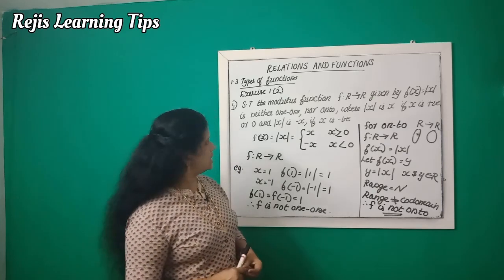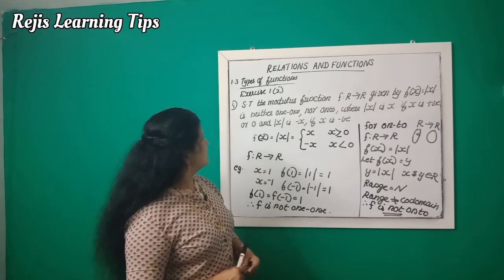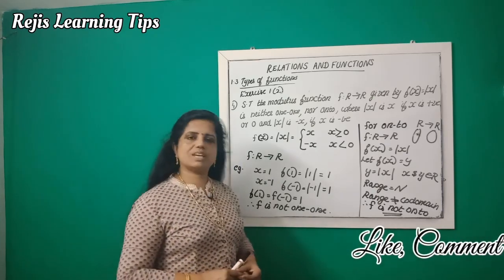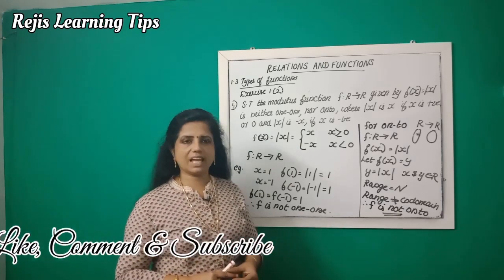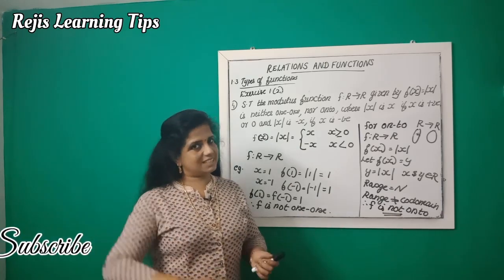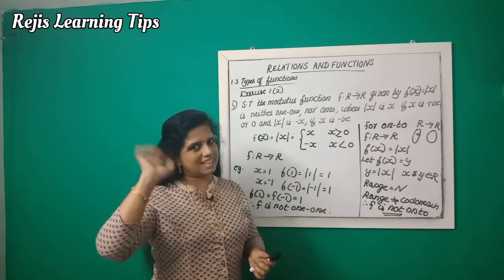Therefore, f is neither one-one nor onto. Okay students, we will study up to here. The remaining questions we will solve in the next class. Until then, bye-bye.